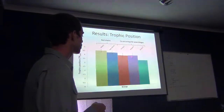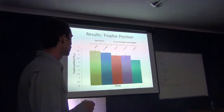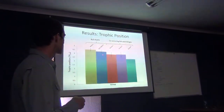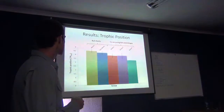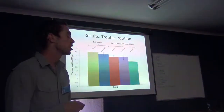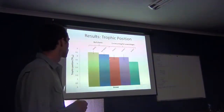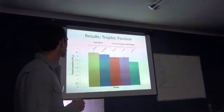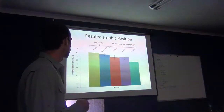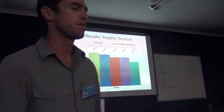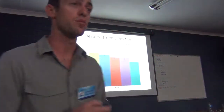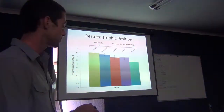This is the coastal predatory teleost component, both with similar trophic positions — slightly less than the bull sharks — but with a trophic level of four, representing the fact that they are still top predators within that marine community.